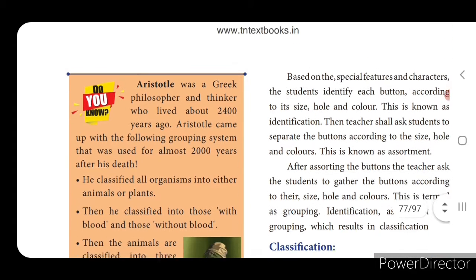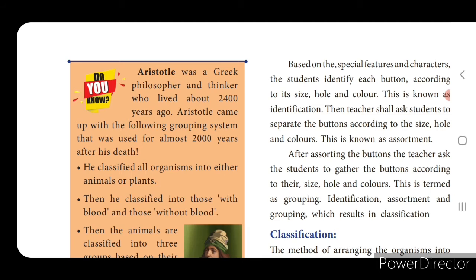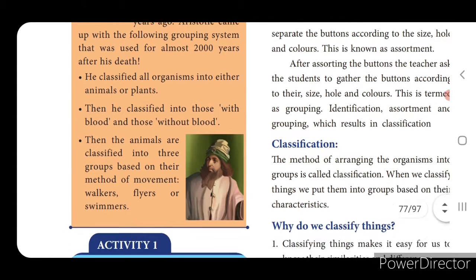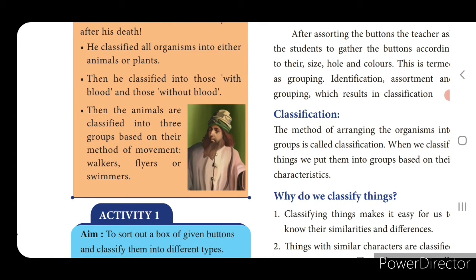Aristotle was a great philosopher and thinker who lived about 2400 years ago. He came up with a grouping system used for almost 2000 years after his death. He classified all organisms into animals or plants, then into those with blood and without blood, and animals into three groups based on their method of movement: walkers, flyers, or swimmers.